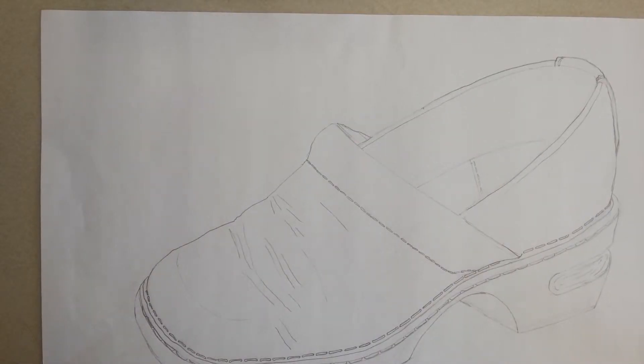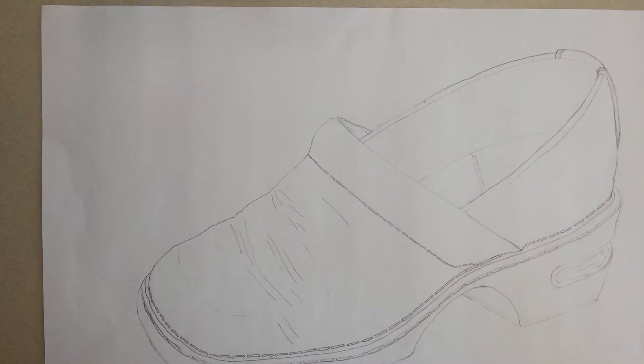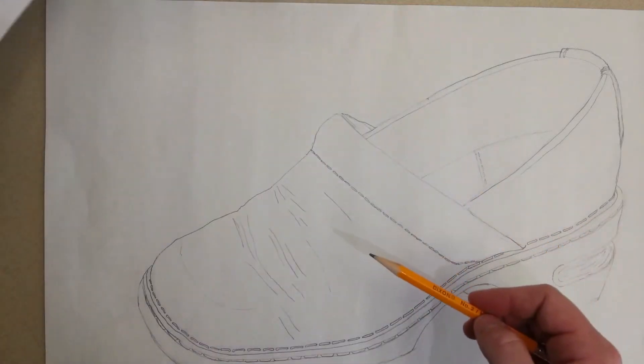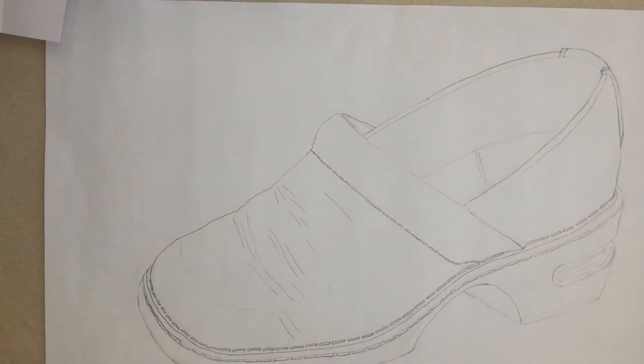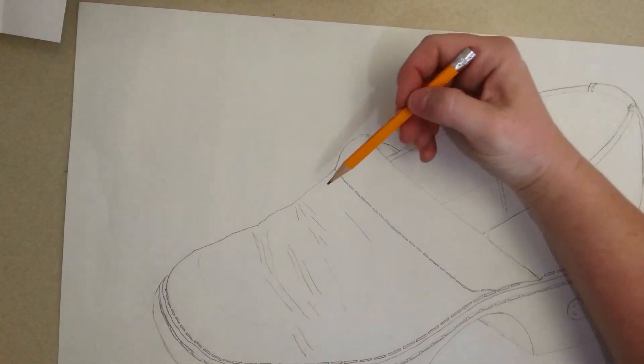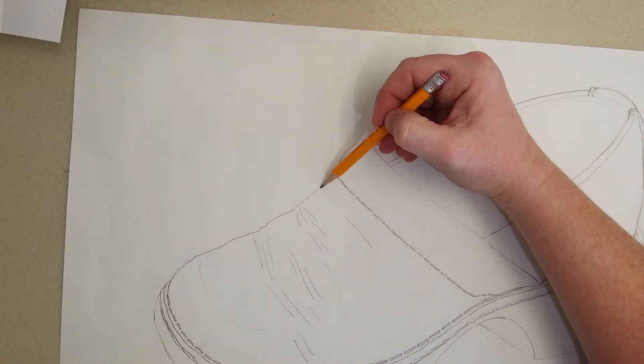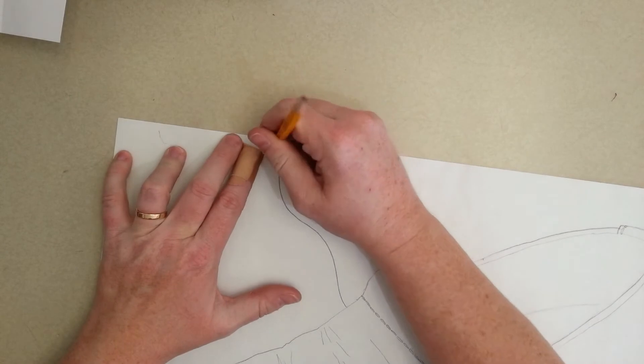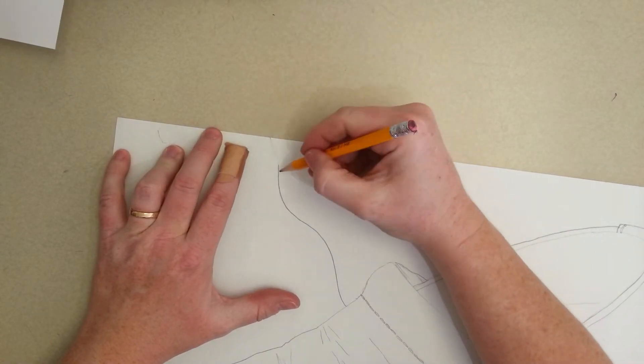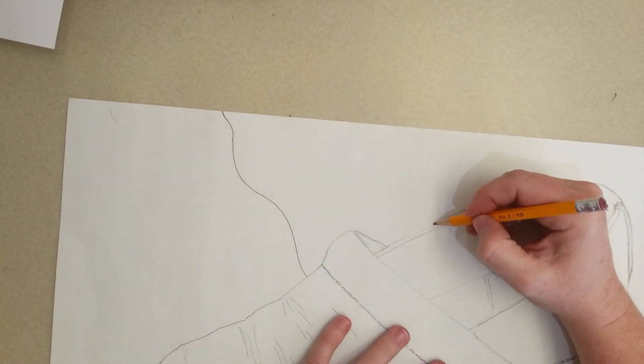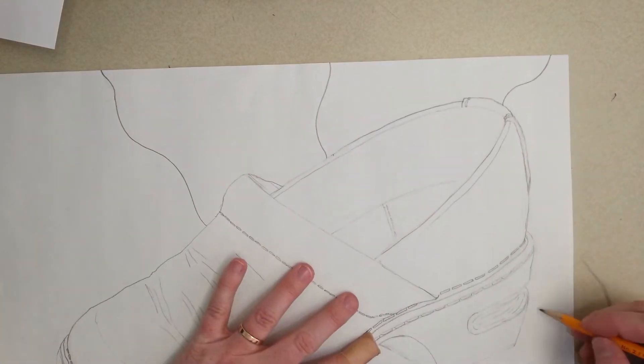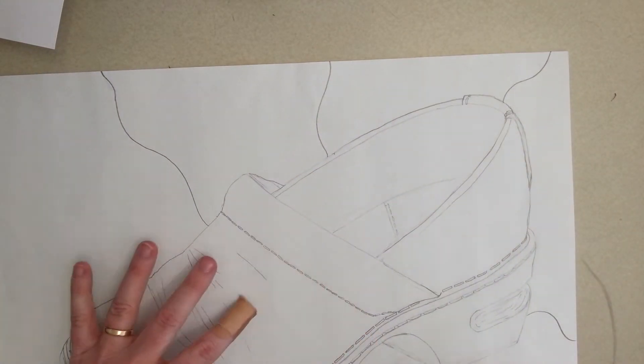The next thing you're going to do after you get your drawing done is you're going to take all these different line ideas and you're going to apply them to this. So what you're going to do is from the edge of your shoe, you're going to divide the negative space. I'm using curvy lines. You can use zigzag lines.